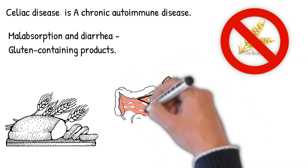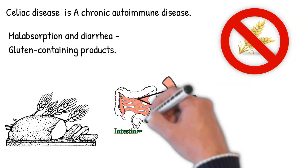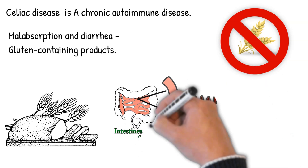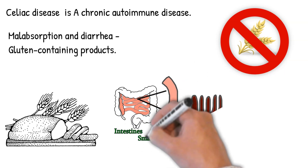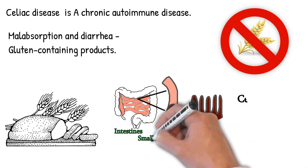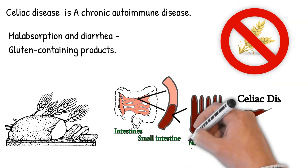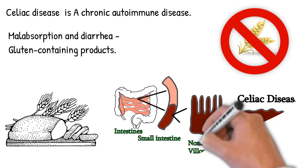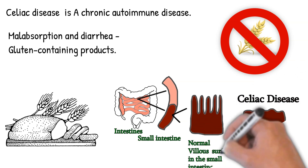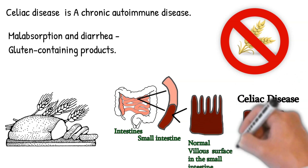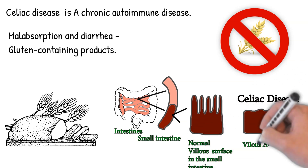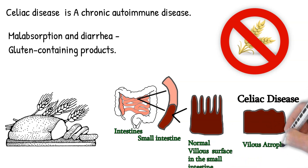The main mechanism is CD4 T cells producing cytokines that release matrix proteases, causing cell death and degradation of the endothelial cells, resulting in the loss of the villous surface in the small intestine.